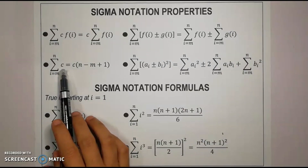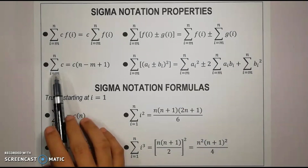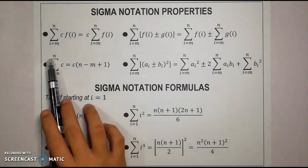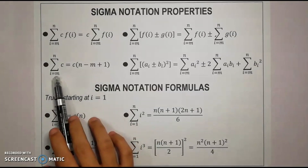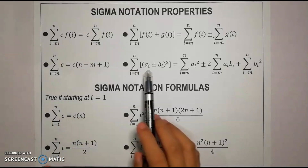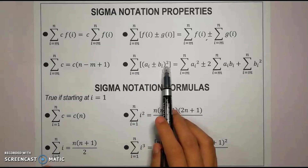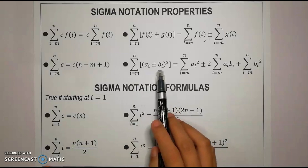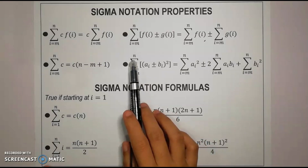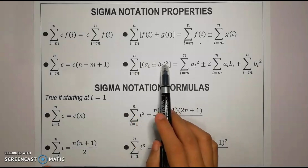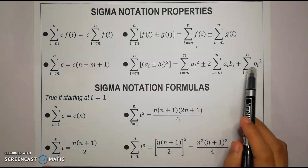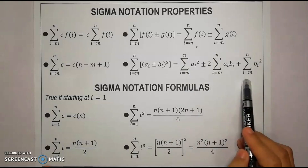If we need to get the summation of a constant element which starts at a certain value m to n, it's okay that it does not start with 1. The formula will be c times the upper limit minus the lower limit plus 1. If we need to get the sum of the square of a binomial from m to n, simply expand the square of the binomial and distribute the summation to each of the terms, then add or subtract them together to get the sum.